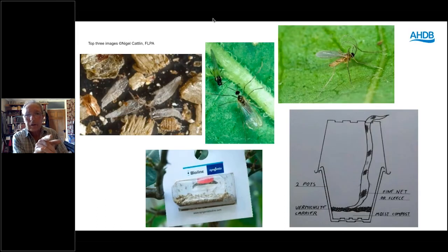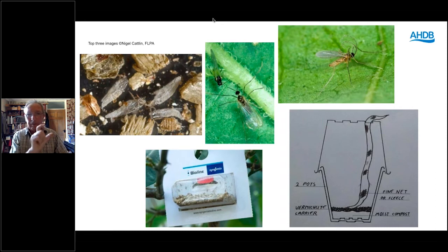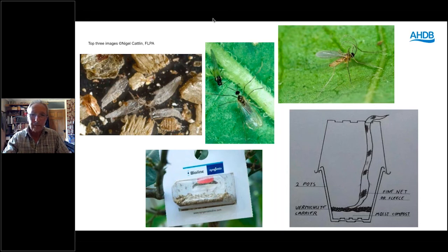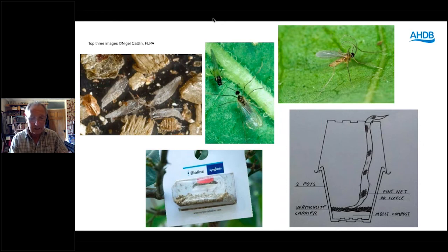Empty cocoons in vermiculite are the carrier for release. The Aphidoletes can come in a blister pack or in a bottle where you shake them out. For ebb and flow benches, use the three-pot system with fleece or netting inside the pot — the females hold onto the netting to mate, as in nature they use spider cobwebs. They pump their wings out, get active, and fly off.